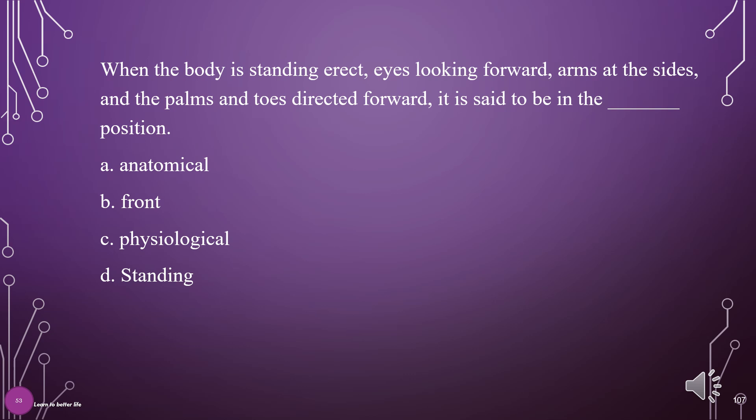When the body is standing erect, eyes looking forward, arms at the sides, and the palms and toes directed forward, it is said to be in the what position? A. Anatomical, B. Front, C. Physiological, D. Standing. The answer is A: Anatomical.